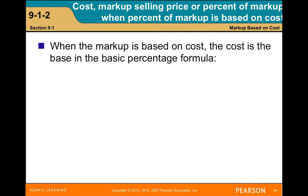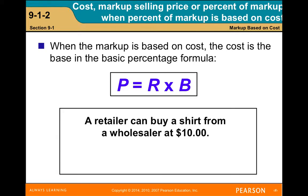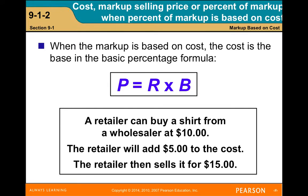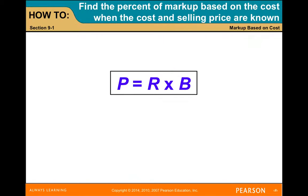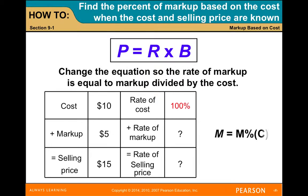When the markup is based on the cost, the cost is the base in the basic percentage formula. So, P equals R times B. A retailer can buy a shirt from a wholesaler at $10. The retailer adds $5 to the cost and sells it for $15. Change the equation so that the rate of markup equals markup divided by cost.